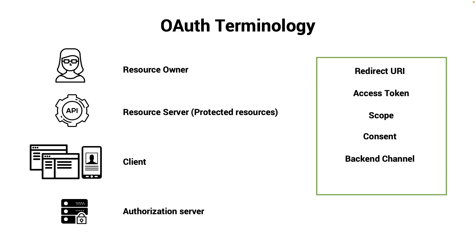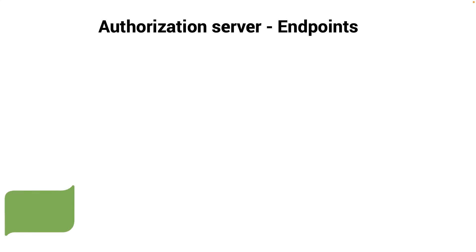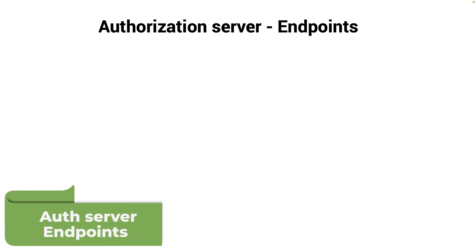Back channels, or highly secure channels — typically refers to machine-to-machine calls. That's important to know when we say back channels. Front-end channels are less secure channels, generally referring to public apps such as mobile apps or SPAs like single page applications. This is typically our Flutter applications.